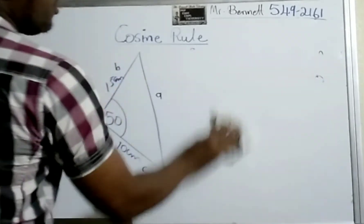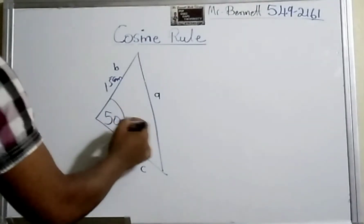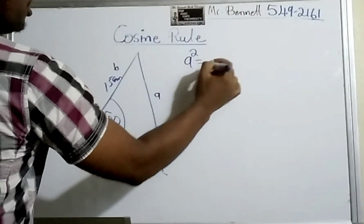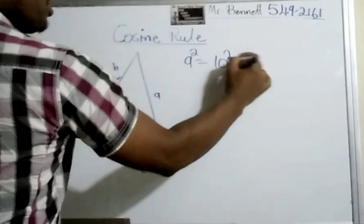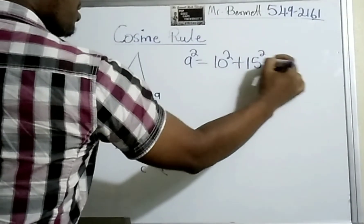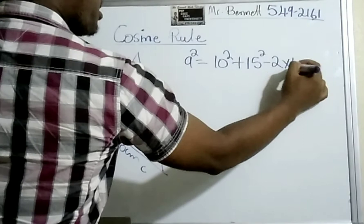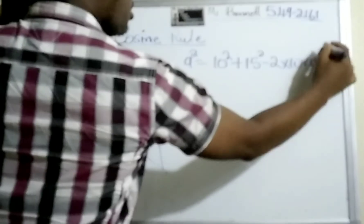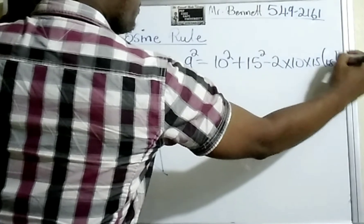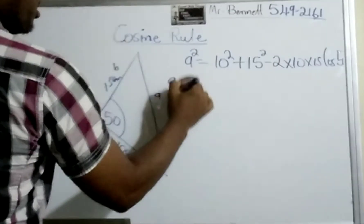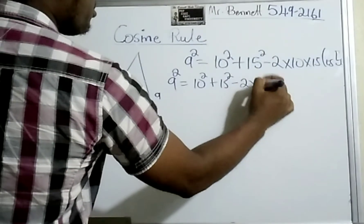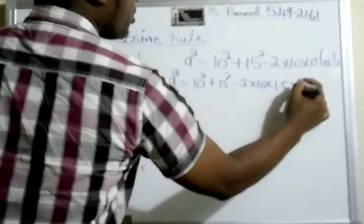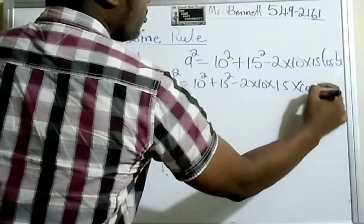Now we are going to use the formula. We want to do it simple, so a² = 10² + 15² - 2 × 10 × 15 × cos 50.